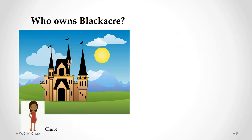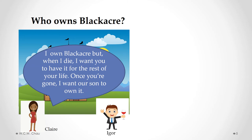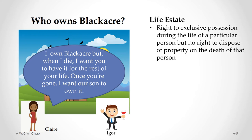Claire is the owner of the fee simple estate in Black Acre, and here is her spouse, Igor. Claire has decided that when she dies, she wants Black Acre to go to Igor for the rest of his life, and once Igor has died, she wants Black Acre to go to their son. So she's put all of that into her will. What Claire has created for Igor is a life estate — a right to exclusive possession during the life of a particular person, but no right to dispose of the property on that person's death. The life estate does not give Igor any right to sell the property; it must go to their son after Igor has died.